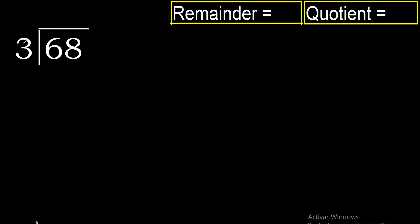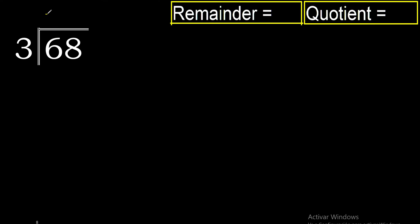68 divided by 3. 6 is not less than 3, therefore we work with 6. 3 multiplied by 3 is 9 — excessive. 3 multiplied by 2 is 6. 6 minus 6 is 0.